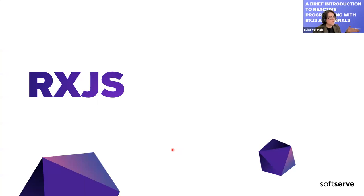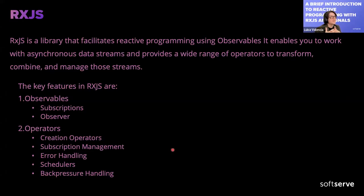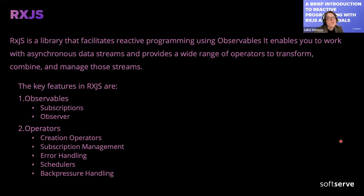Now an example with RxJS. When you start an Angular application, RxJS is one of the things you have by default. It's a library that helps us make reactive programming using observables and enables us to work with asynchronous data — to transform, combine, and manage those streams. The key features in RxJS are observables and operators, including different types like creation operators and error handling operators.